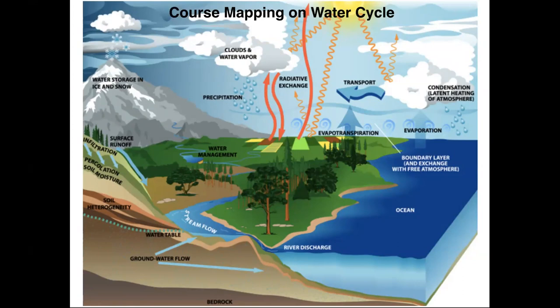Next, I'm going to map a bunch of courses onto the water cycle. This schematic shows the water cycle. On the top left you have water storage in the form of ice and snow. That stored water eventually makes it through stream flow, infiltration, and surface runoff into the ocean. Then you have processes occurring in the ocean and between the ocean and the atmosphere, like evaporation, radiative exchange, and transport.